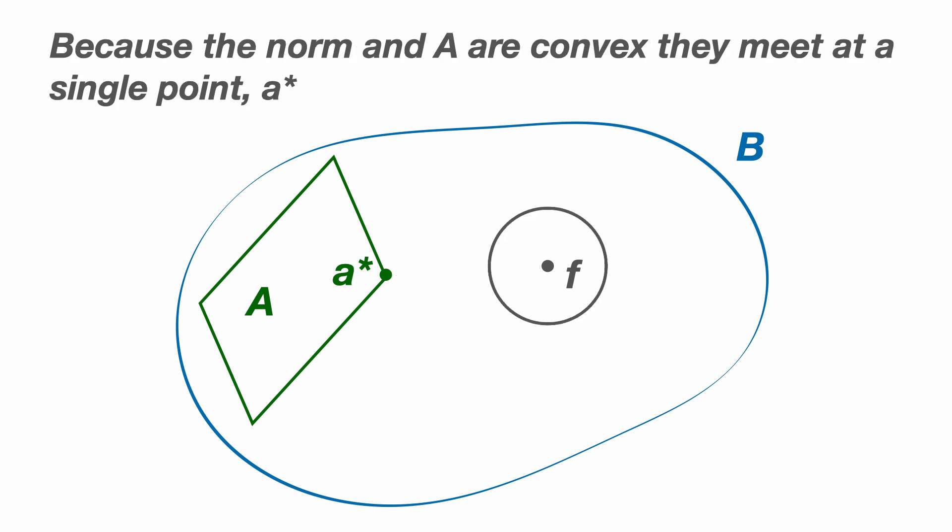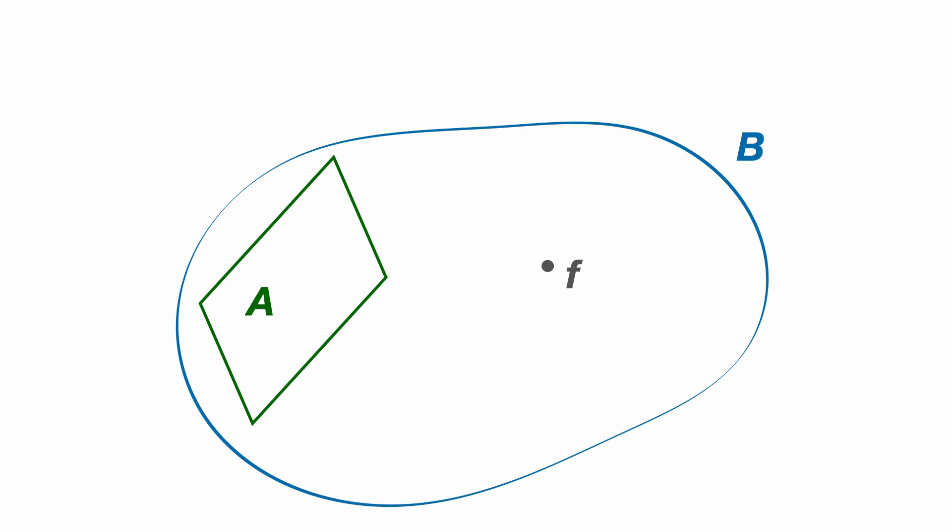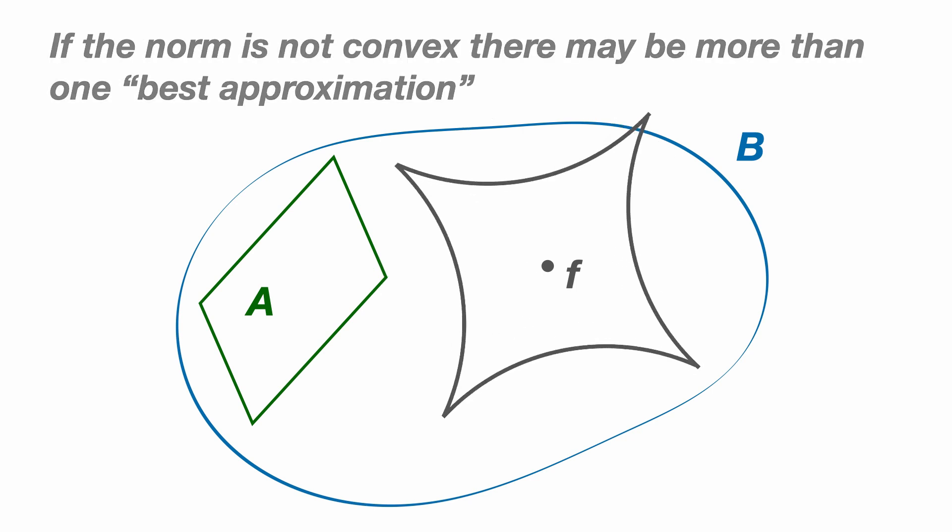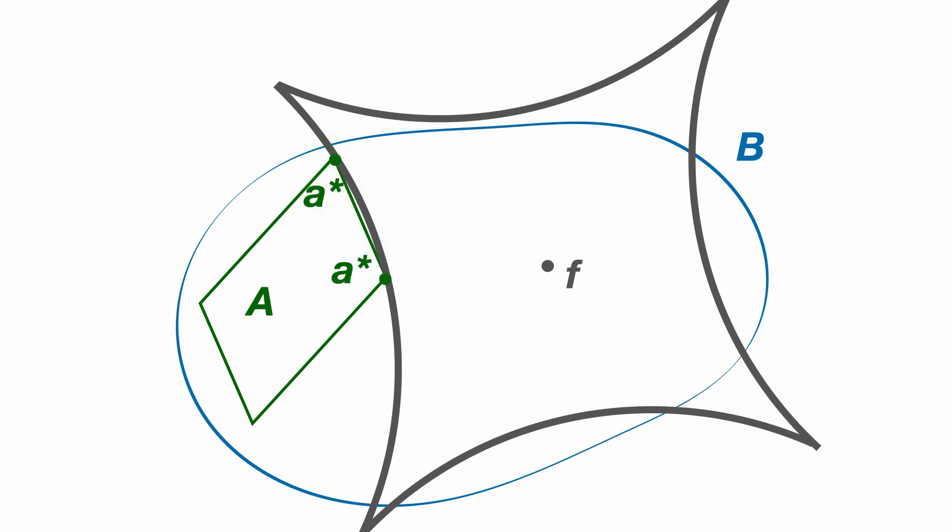Because the norm and capital A are convex they meet at a single point A star, given a single unique best approximation. If the norm is not convex there may be two or more points equidistant from F and therefore more than one best approximation.